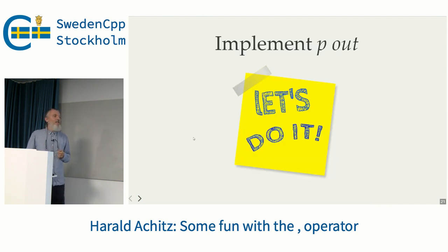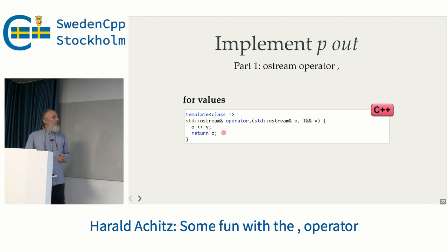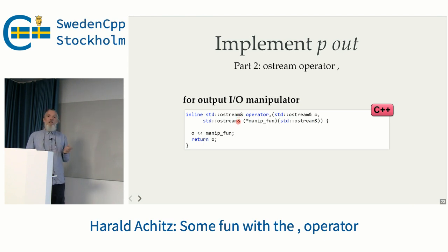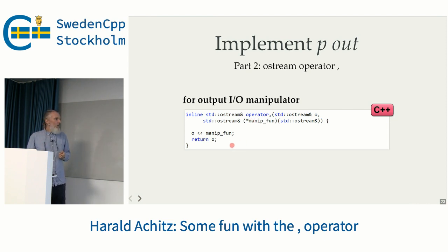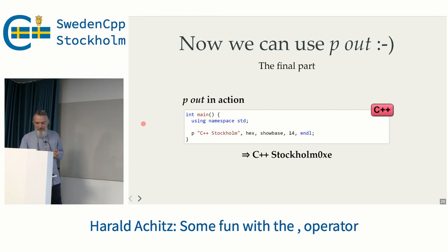So let's implement 'pout'. We overload the stream operator for values: we take a comma operator, it takes an ostream and whatever value, and it pipes it to the ostream and returns the ostream. This works then for everything you could put in — nearly. We need one more overload: we need an osmanip function, like std::endl, fill, and so on — these are all functions. So we need to pass a function pointer, the same way stream operators have always worked. We sort this in and return the function. And there we have it. We just need 'p', which we use as a macro — so we take the comma and fill in the left-hand side already. And when we have this, we can use it — and that's how it works.